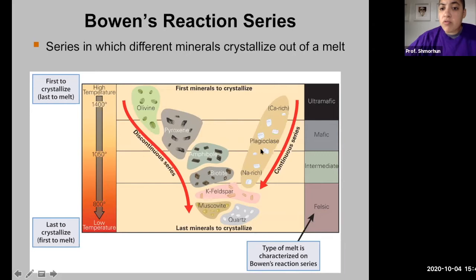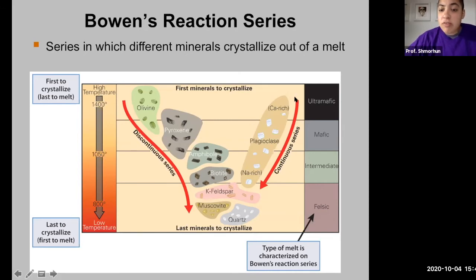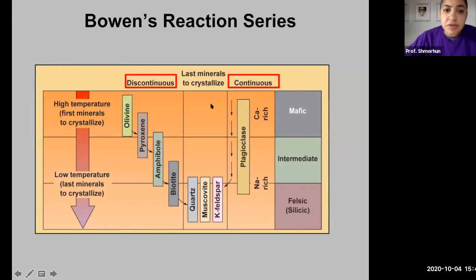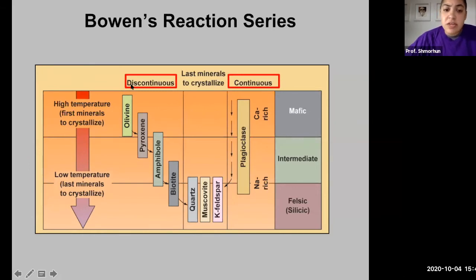What about the right-hand side of the screen — what about plagioclase? Why do we have two different types of series here? These two series are called the discontinuous and the continuous series. The discontinuous series contains the minerals olivine, pyroxene, amphibole, and biotite.